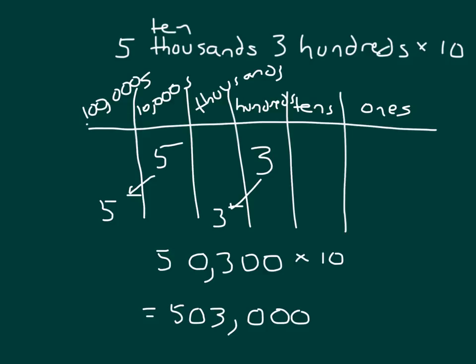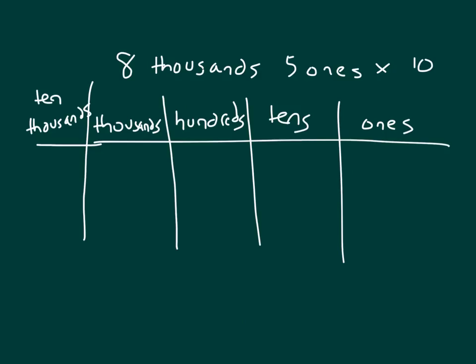Let's give you a problem to try. We have eight-thousands five-ones times ten. Make sure you draw the place value chart, and you can use either numbers or disks to figure out the product. Pause the video and do your work, please.